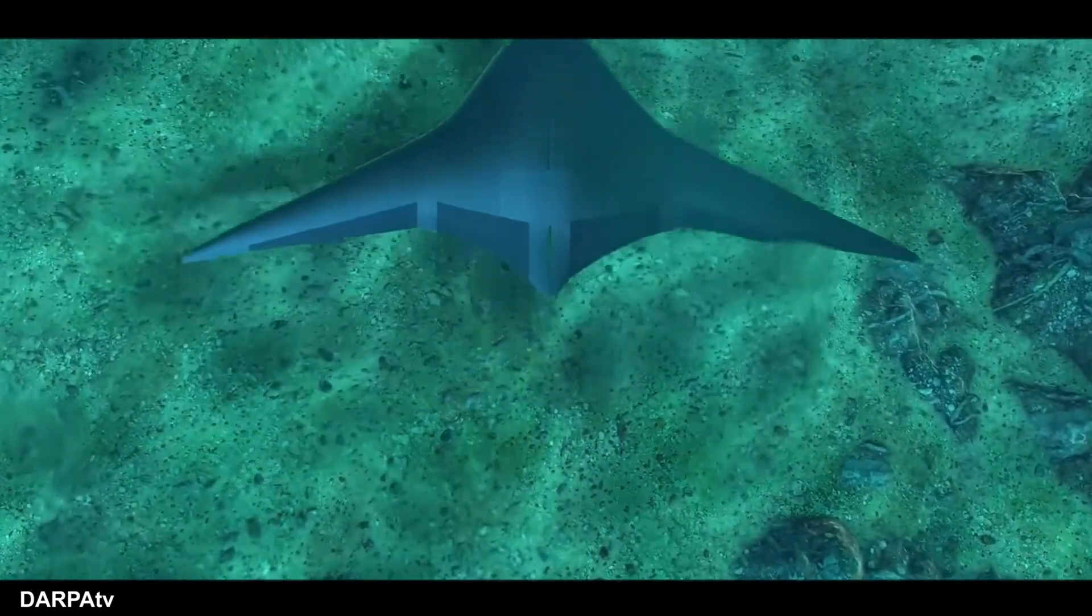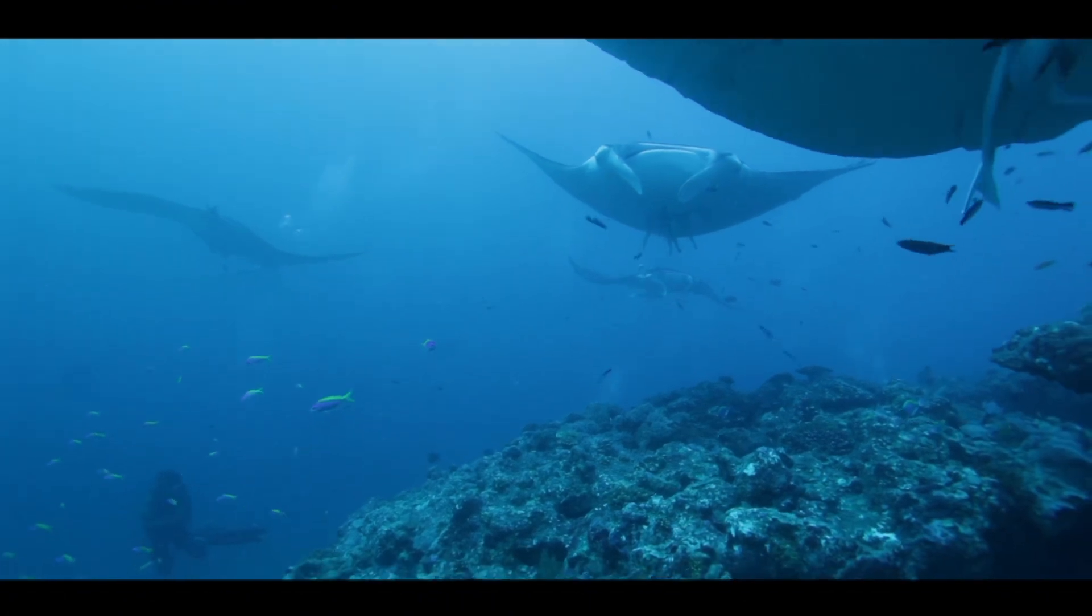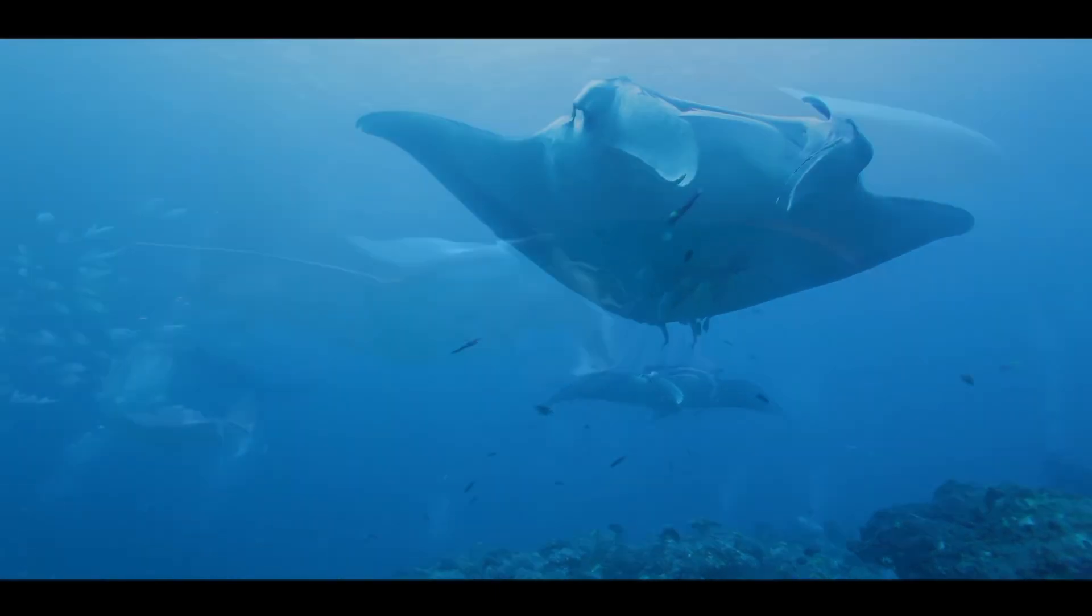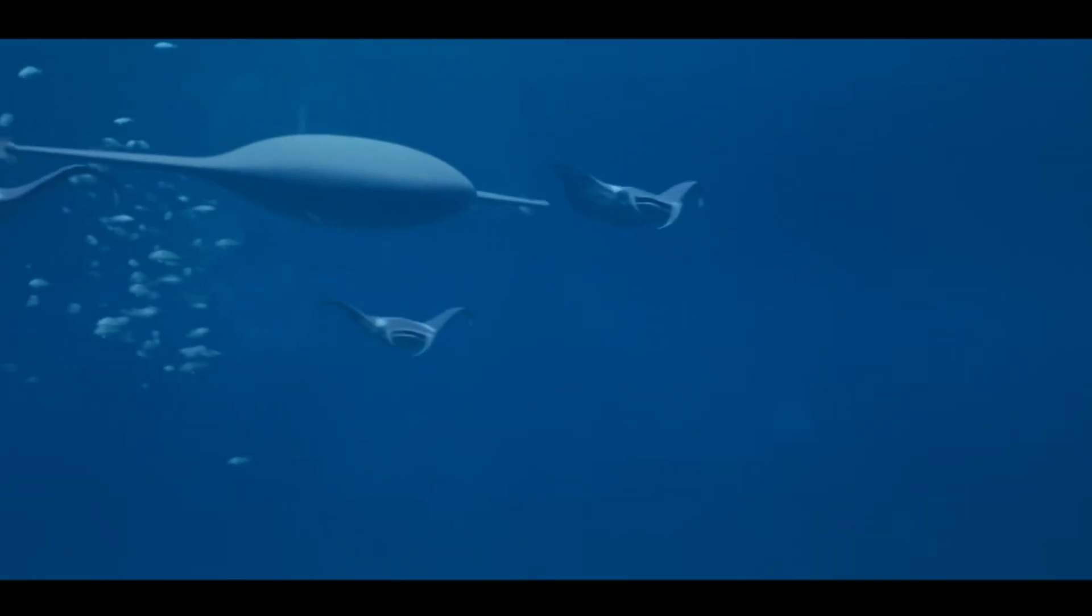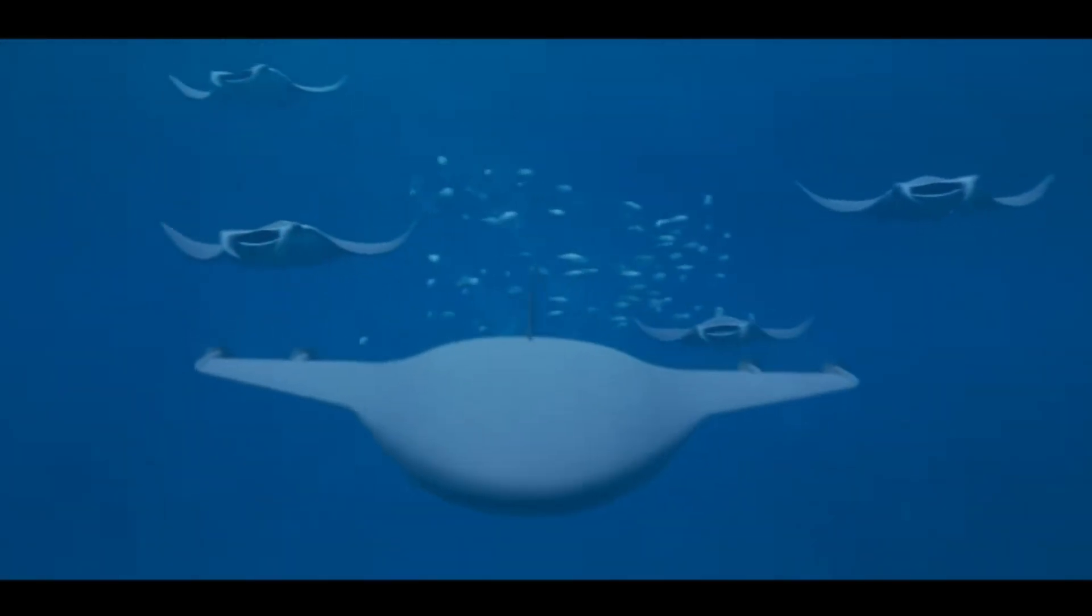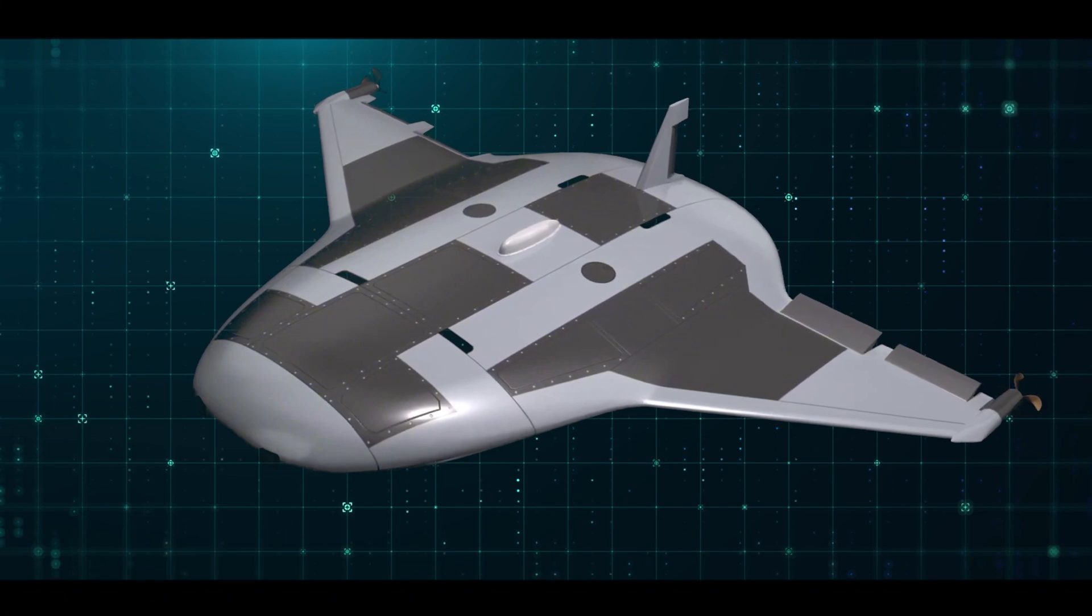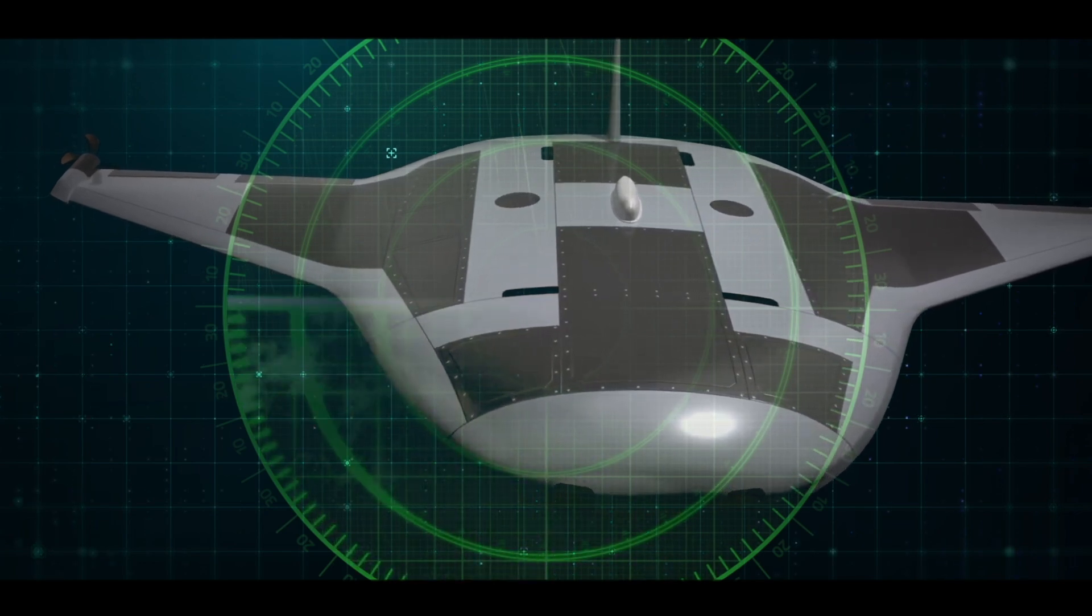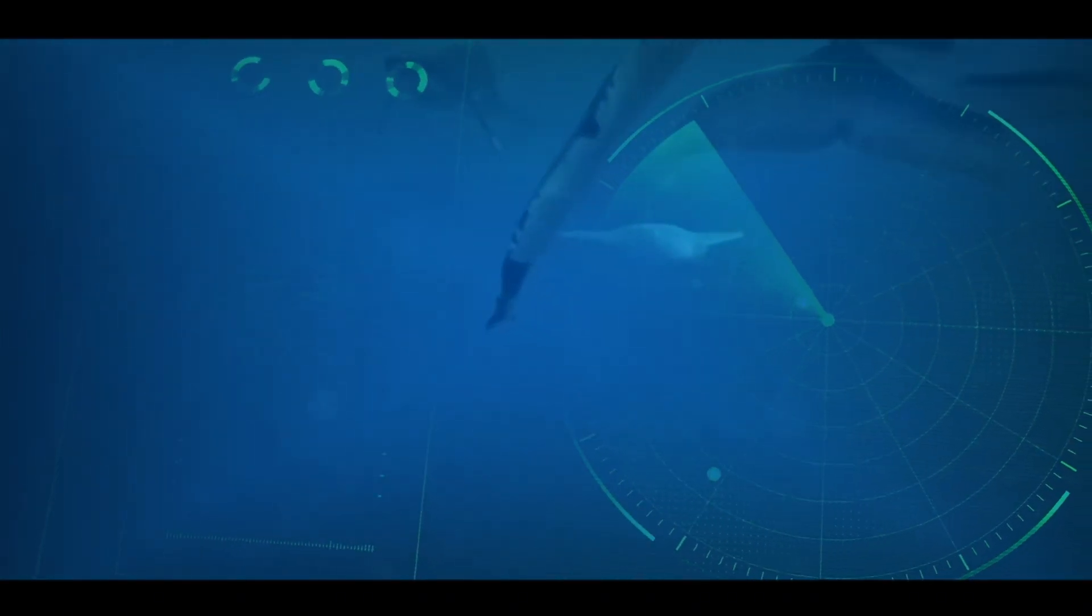The manta ray's design draws inspiration from the natural world, mimicking the graceful silhouette of a manta ray. This biomimetic approach enables the drone to glide silently through the water, seamlessly blending into its marine surroundings. Its delta-shaped wings and flat profile significantly reduce its acoustic and visual signatures, making it challenging to detect using traditional sonar or radar systems. This stealth capability is a critical asset in reconnaissance and covert operations, where avoiding detection is paramount.